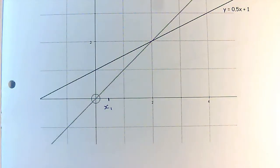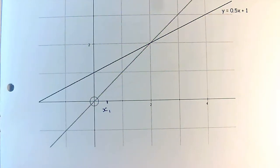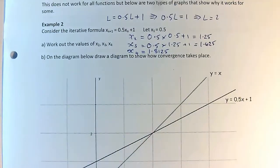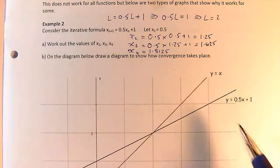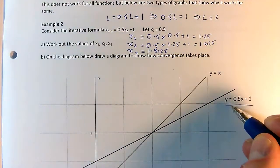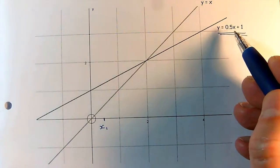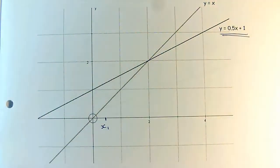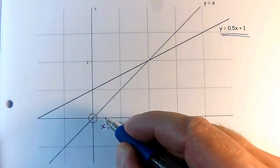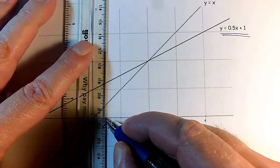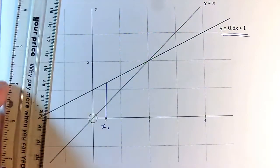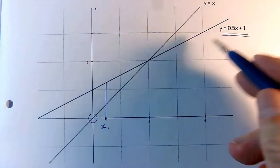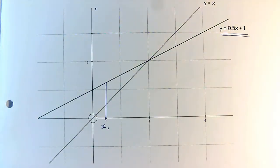And now I have to simulate substituting that x1 into the iteration. So the iteration was 0.5xn plus 1. So I've got the graph of y equals 0.5x plus 1. So that graph there is the one that comes into play whenever I use the iteration. So I can demonstrate substituting x1 into the iteration by just drawing a line vertically to the iteration line. Normally this is going to be a curve, and I like to say we go vertically to the curve.